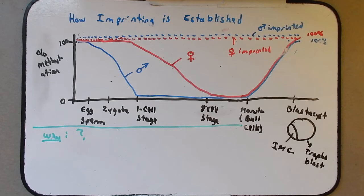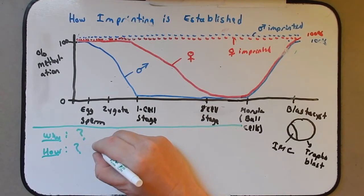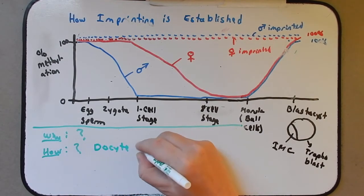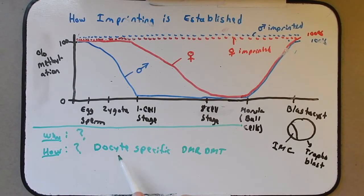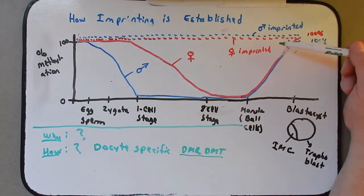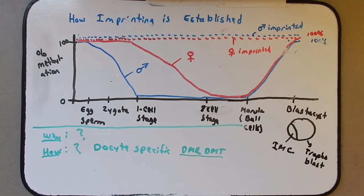Now the next question is, how? Again, we don't know. But, there is some thoughts that there is this oocyte specific DMR DMT. So that once the sperm has fertilized the egg, this specific oocyte DMR DNA methyltransferase is active and will specifically target the imprinted genes. How it would know which ones to target? Again, we don't know. But there is some evidence for this specialized DMR DMT.